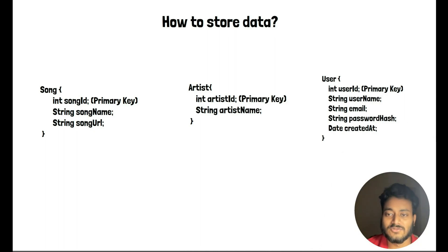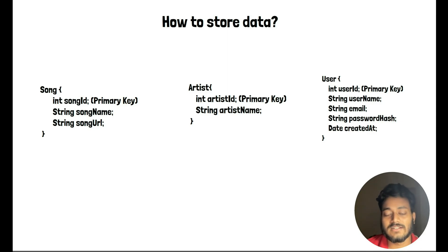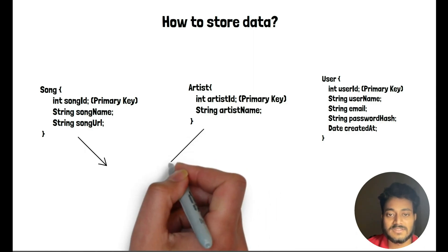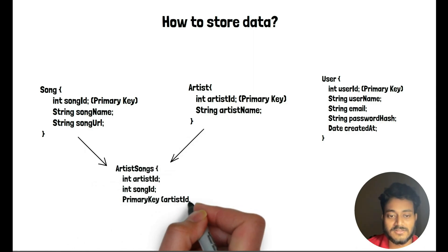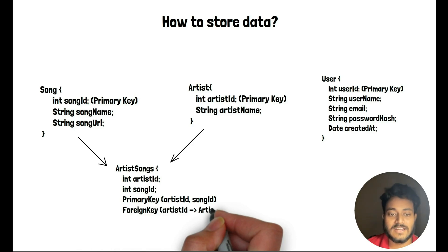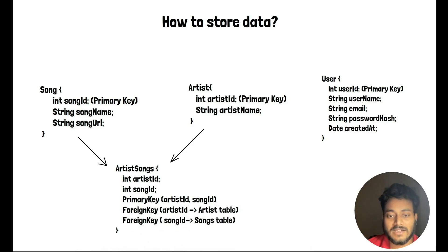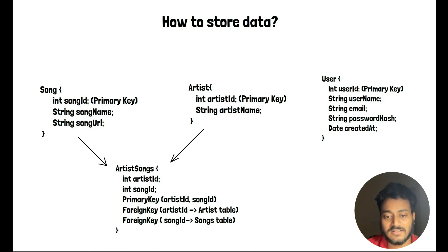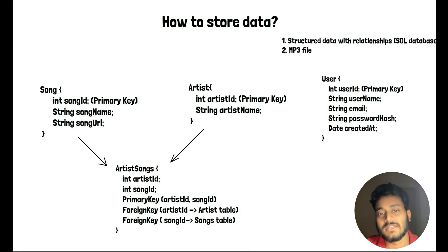Apart from this, we'll have a User entity with a user ID as primary key, name, email, password stored in hash form, and the date on which the account was created. Another table can be derived from the Artist and Song tables — a relationship table having artist ID and song ID as a combined primary key. These are structured data with relationships, so an SQL database might suit us to store this information.